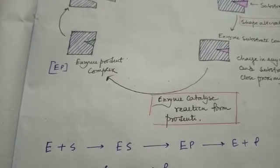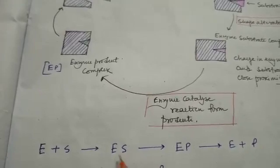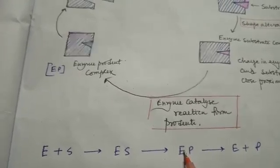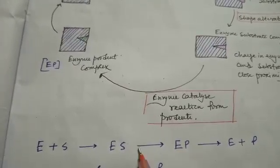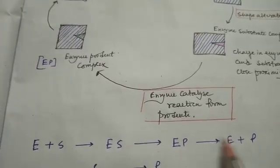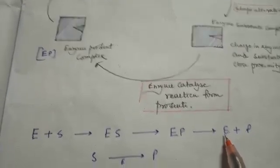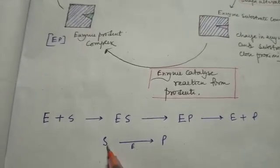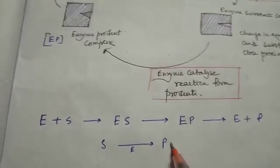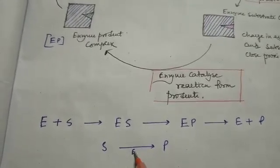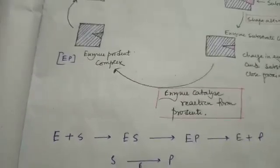We can put the whole overview of the working of this particular enzyme in an equation: enzyme binds with the substrate and they form the enzyme-substrate complex, then the enzyme-product complex forms through the chemical reaction, then the product is released and the enzyme is free again. The substrate forms into a product with the help of the enzyme — this is the whole reaction.